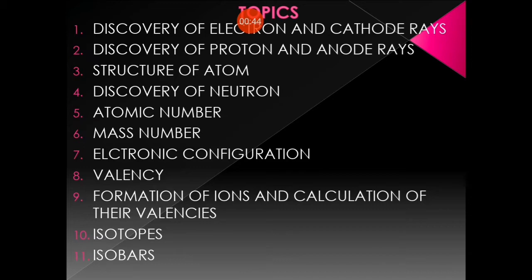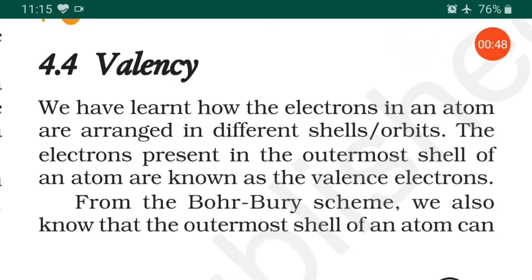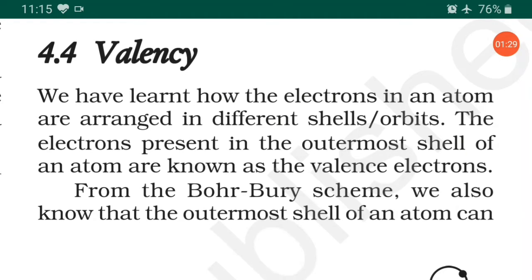First I would like to start with valency. In our NCERT textbook, valency is covered and we have learned how electrons in an atom arrange in different shells and orbits. Valence electrons can be defined as the electrons present in the outermost shell of an atom. In an exam it can be asked: define valency and valence electrons. Valency is the combining property of electrons in the outermost shell, and valence electrons are the electrons present in the outermost shell of an atom.